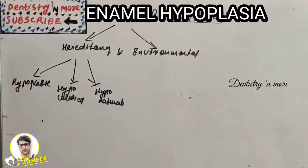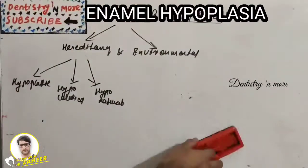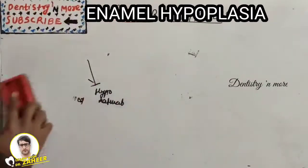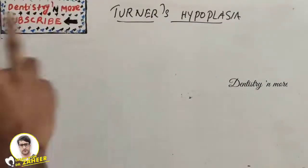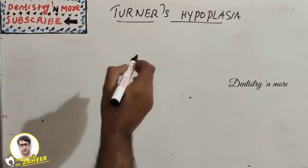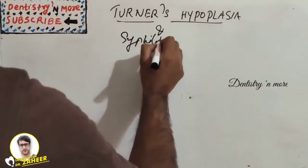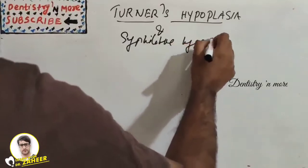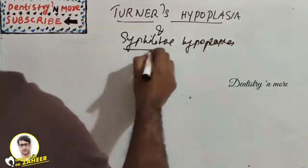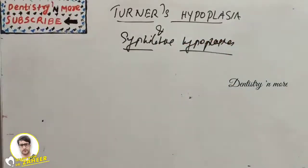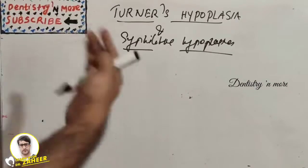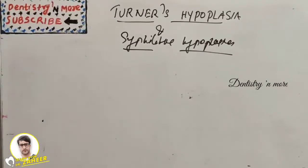This video focuses on two types: Turner's hypoplasia and syphilitic hypoplasia, because these are very commonly asked short notes. Both have more distinctive features to write about in detail, which is why exam questions are frequently asked on them.